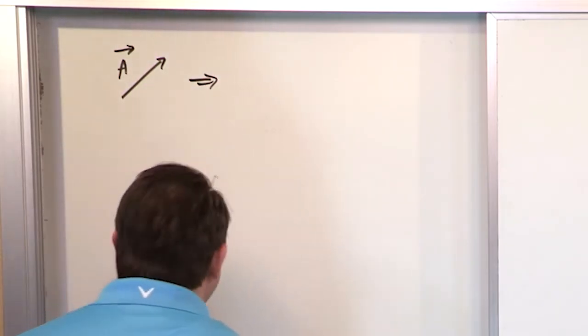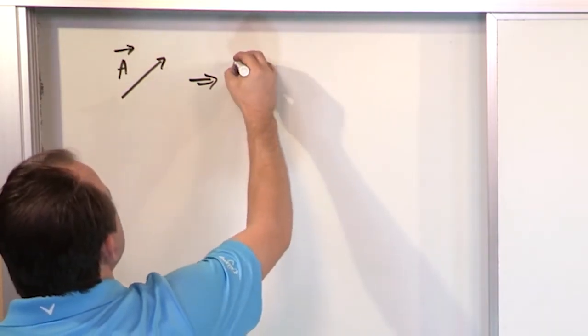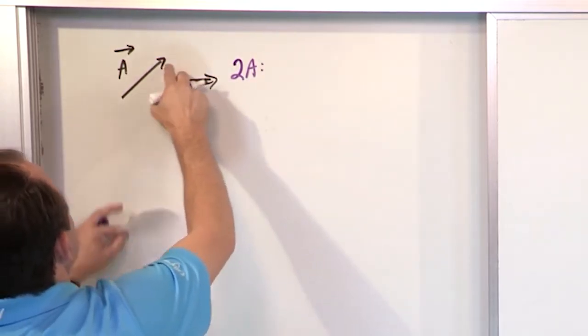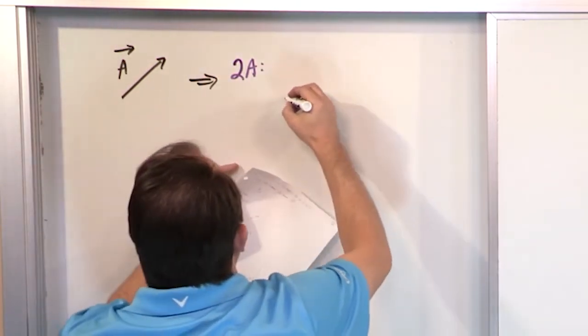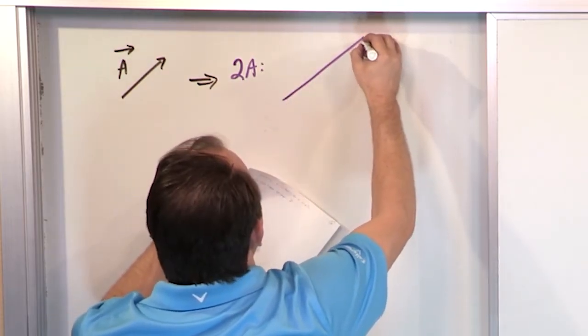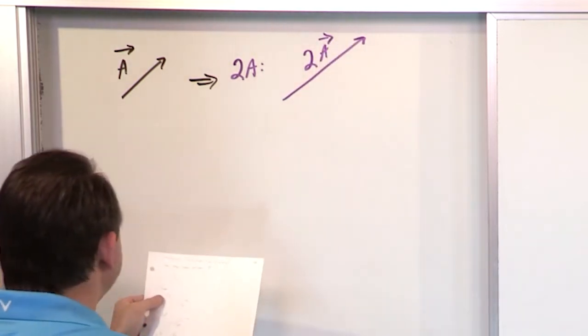Then if we want to calculate, or I guess you don't really call it calculator, it's graphical. What would two times a be? Well, what is it? This is one length. So twice that length is about that long. So then I would draw the arrow oriented exactly the same way. I think that's about twice as long. So two times a vector. That's what two times a is.